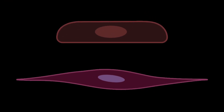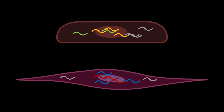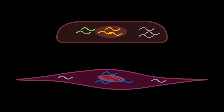The human body is composed of trillions of cells. These cells express different genes that enable them to carry out specialized functions. But how are these genes organized within each cell?